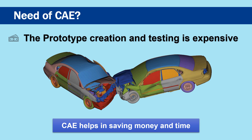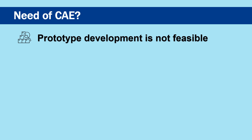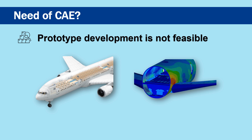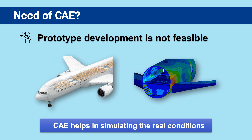Getting similar results through CAE not only helps in saving costs but also saves a considerable amount of time and other resources required to build prototypes and conduct physical tests. There could be situations when developing prototypes is not feasible due to many constraints such as physical or economic factors. For example, developing prototypes of planes or submarines is a tedious task, and even developing scaled models of them for physical testing may not give actual results. In such situations, CAE plays a significant role in estimating the performance of the system by simulating the real conditions.